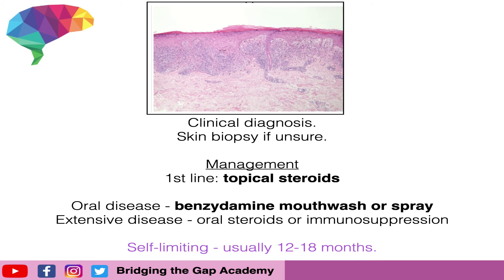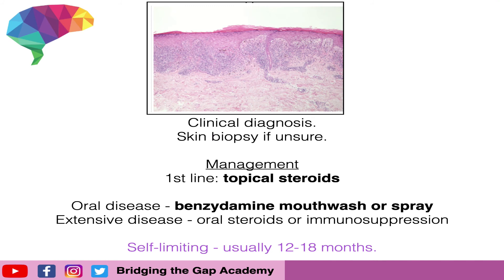With regards to management, some individuals with lichen planus will have their condition spontaneously resolve with no need for treatment. It is a self-limiting condition that should normally last 12 to 18 months. However, patients may have problems with symptoms such as itching, and therefore steroids and antihistamines may be given. If the condition persists, stronger steroids, immunosuppressants, or phototherapy may be given by the dermatologist. If it is oral lichen planus, a mouth wash or spray may be given instead.